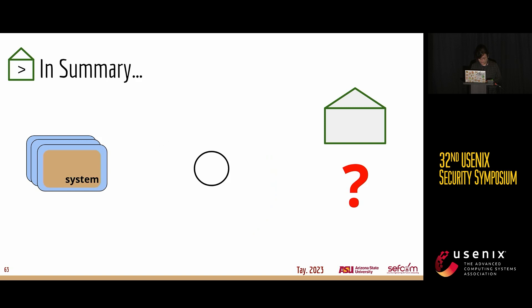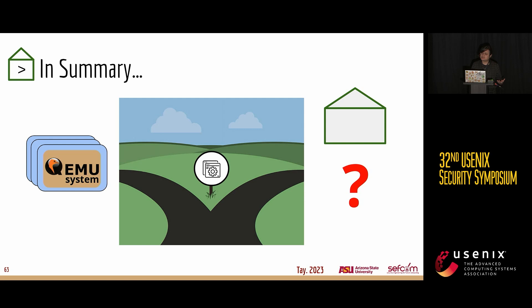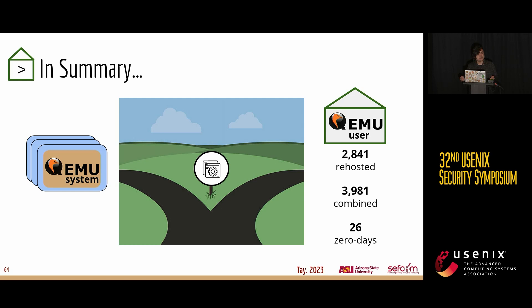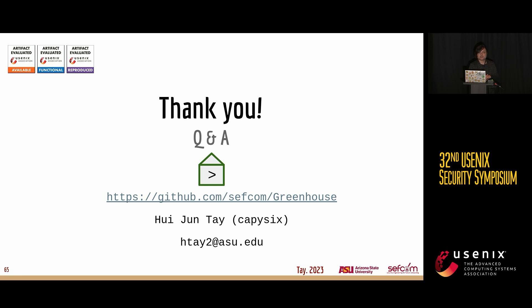To summarize: Greenhouse took the existing idea of sacrificing emulation accuracy to achieve better re-hosting. This led us to re-hosting more than 2,800 firmware services in user space, nearly 4,000 combined re-hosted firmware services when used with existing state-of-the-art full-system techniques, and 26 real-world zero-days. If you're interested in trying out Greenhouse, our source code and instructions can be found on our GitHub web page. Thank you for your time.